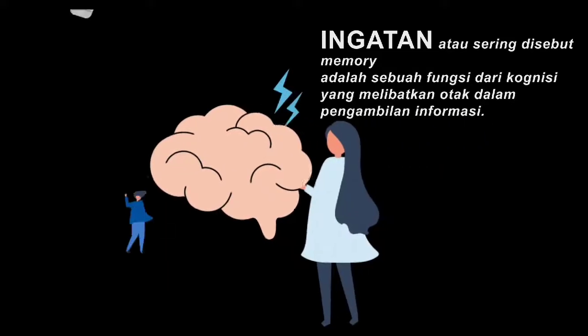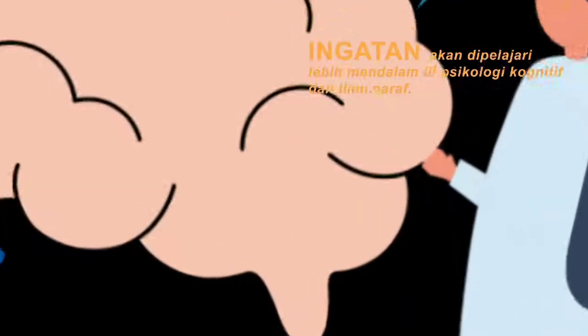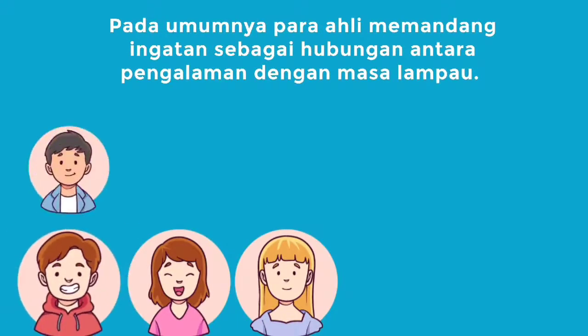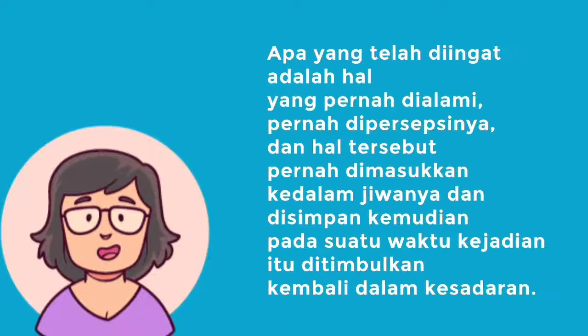Hello, this is our learning video from group 6, which discusses memory. Memory, often called memory, is a function of cognition that involves the brain in the processing of information. Memory will be studied in greater depth in cognitive psychology and neuroscience. In general, experts view memory as a relationship between experience and the past — what has been remembered is what has been experienced, even perceived, and has been stored so that at a later time the incident can be recalled.